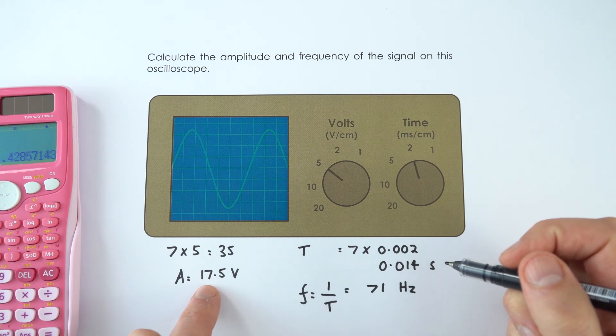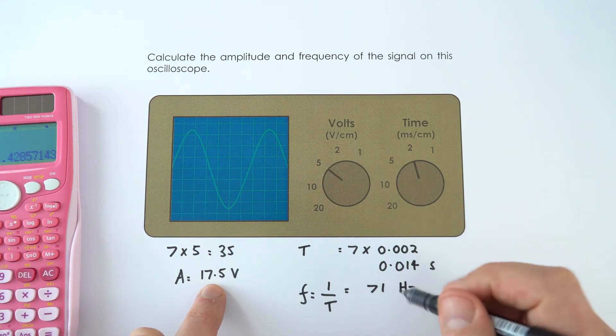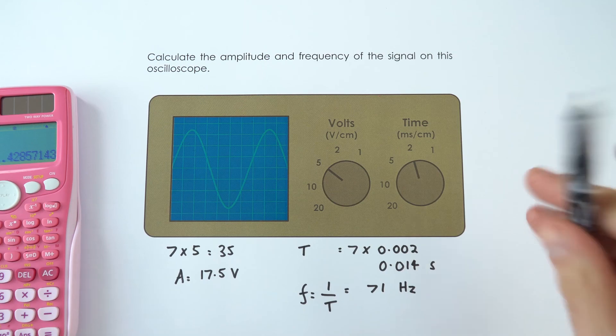So what we're looking at is a 17.5 volt, 71 hertz AC supply displayed on this oscilloscope.